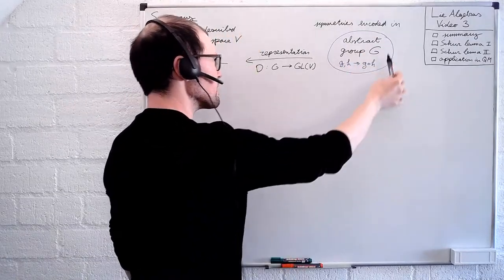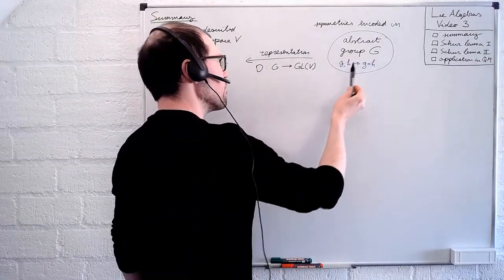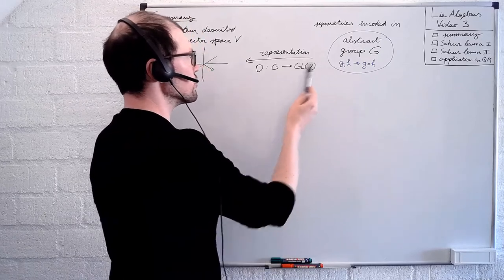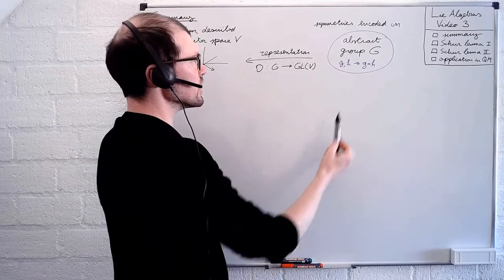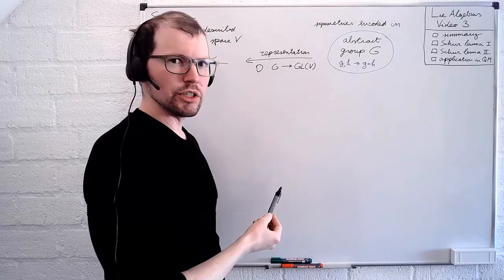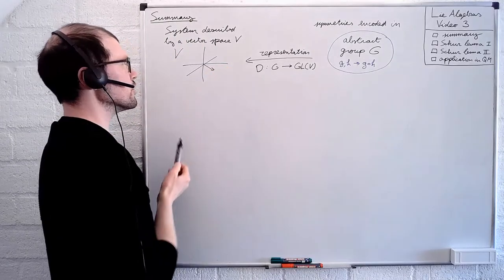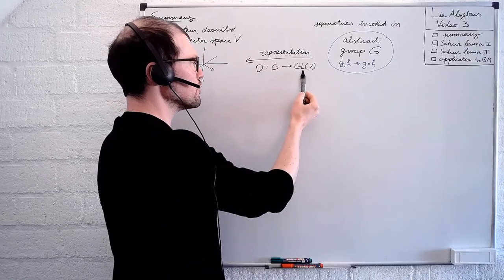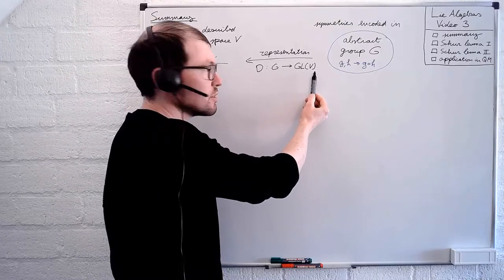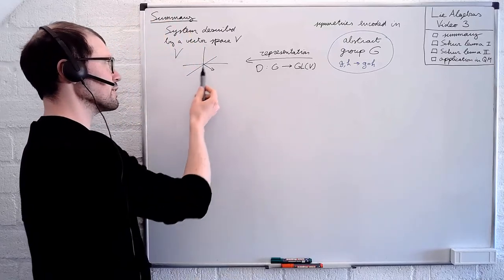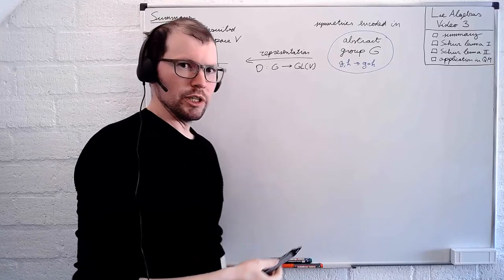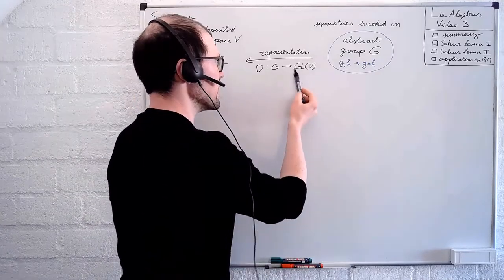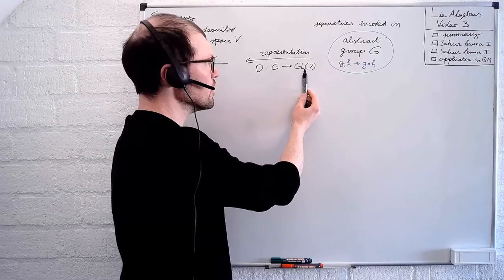This group G is an abstract algebraic object, but to really describe how the symmetry is implemented in the linear system, we introduced the notion of a representation — associating to every element of the symmetry group a linear transformation of your vector space V. Precisely, it's a mapping from the group G to the general linear transformations of a vector space. If we choose a particular basis, the vector space is ℝⁿ or ℂⁿ, and these transformations are n×n matrices.